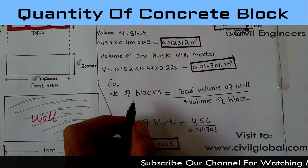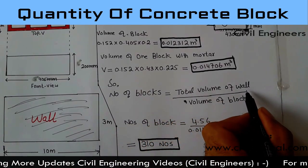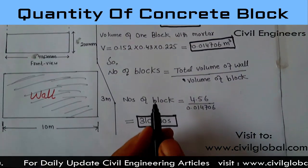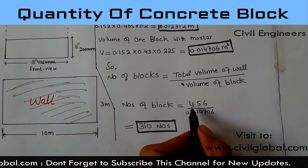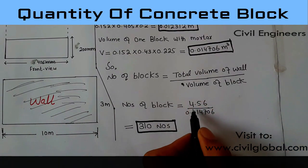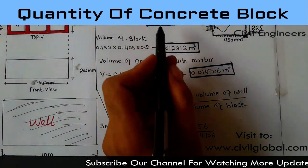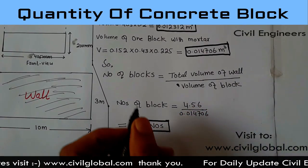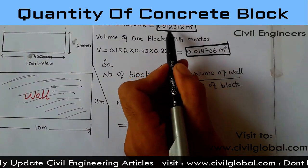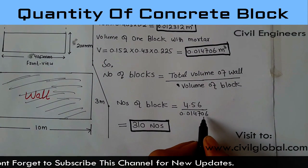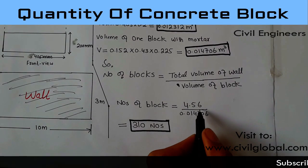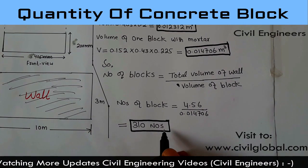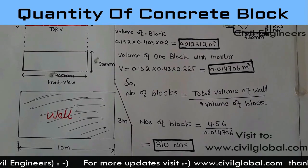Now I can find out the quantity of blocks. Number of blocks is equal to total volume of wall divided by volume of one block with mortar. That is 4.56 divided by 0.014706, which gives you 310 numbers of blocks. So this is the class for today: how to calculate quantity for the concrete block.